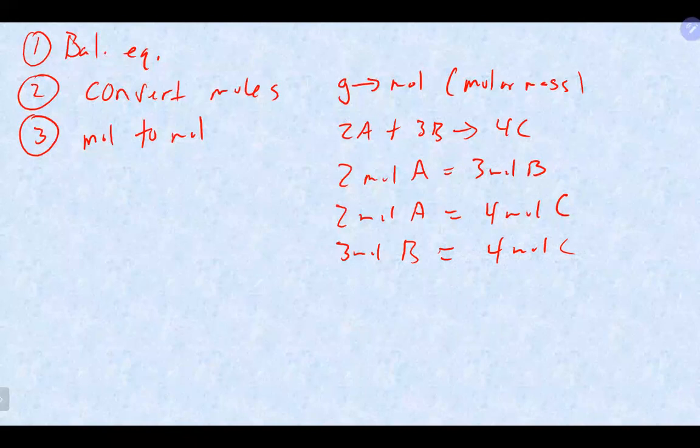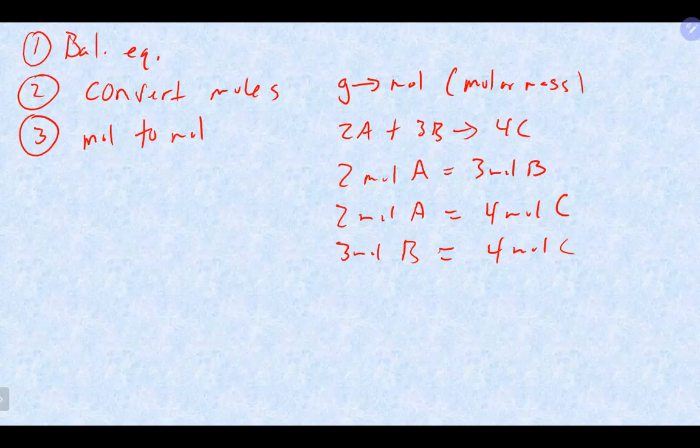Which is why step number one is really important — make sure you have a balanced equation. The purpose of stoichiometry, as we talked about, is really a conversion factor. A lot of times we're given information about a reactant or product we're not interested in, and we need to go from that to something else in the equation, using the coefficients as the conversion factor.